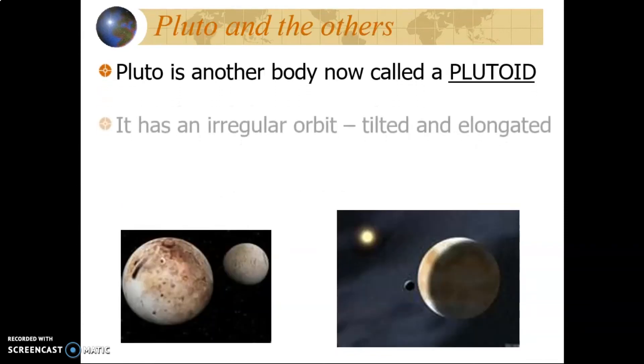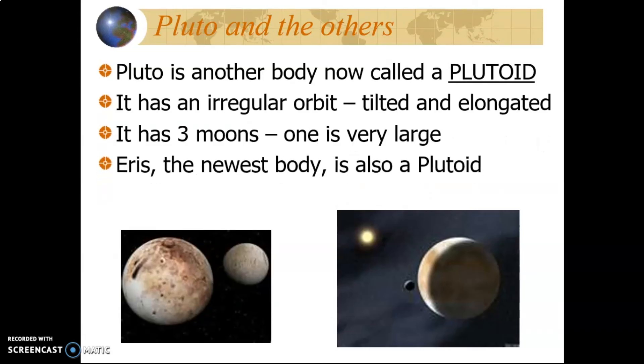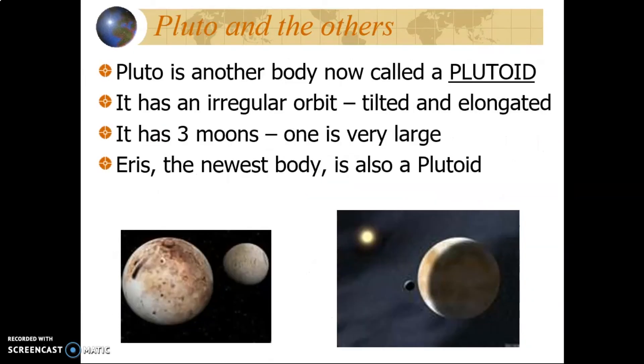As I said before, Pluto was considered a planet until 2006, when changes in the definition of a planet renamed it a Plutoid. It has an irregular orbit, which is tilted and wider compared to the eight planets of our solar system. Pluto has three moons, one is actually half the size of Pluto. Eris, a recently discovered body, is also a Plutoid.